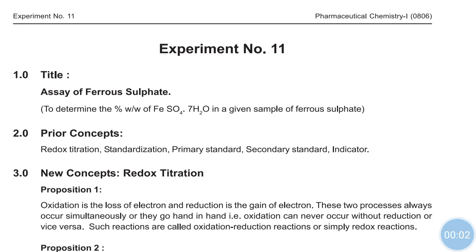Hello students, today we are starting a new experiment: Assay of Ferrous Sulfate, Experiment Number 11. In the previous part we had seen redox titrations, and before that we had seen back titration, that is the assay of zinc oxide. So we all know the basic concepts behind redox titration. This assay of ferrous sulfate is a redox type of titration.